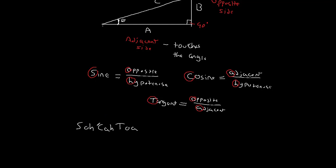we get this thing called SOHCAHTOA. Sine, opposite over hypotenuse; cosine, adjacent over hypotenuse; tangent, opposite over adjacent. SOHCAHTOA.